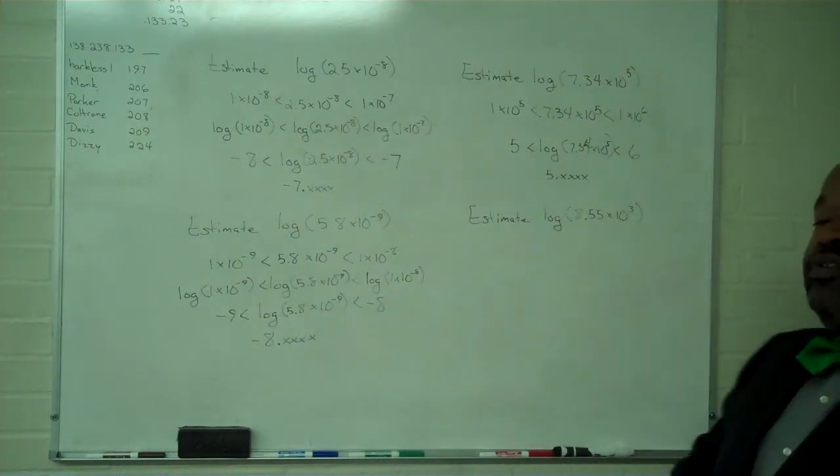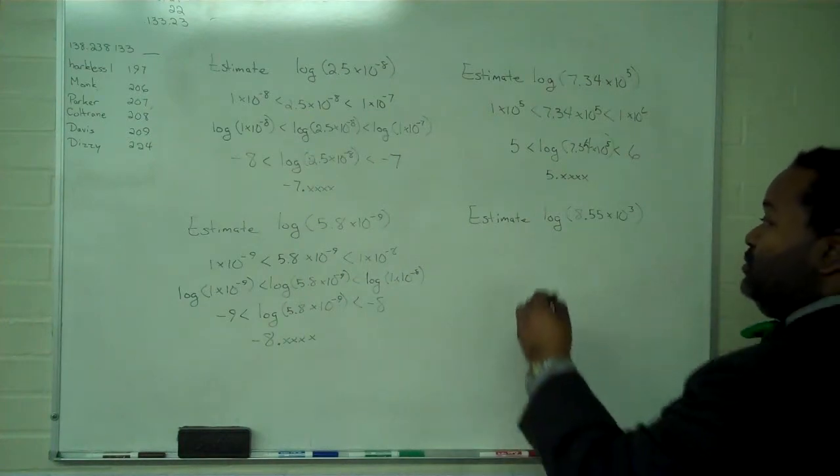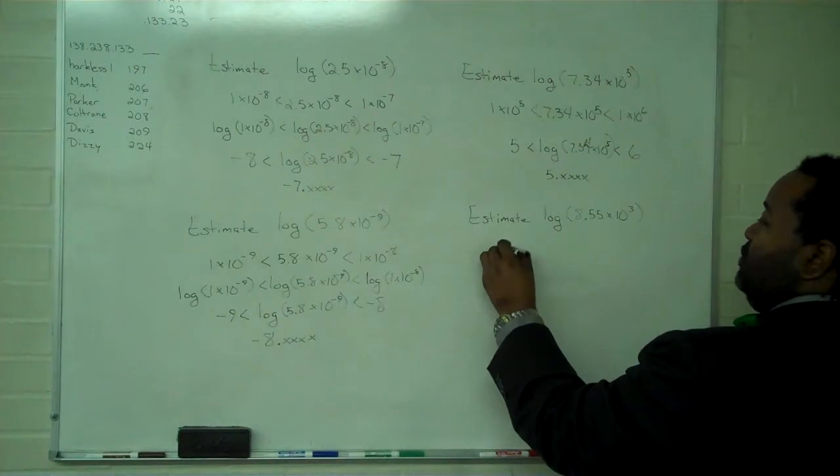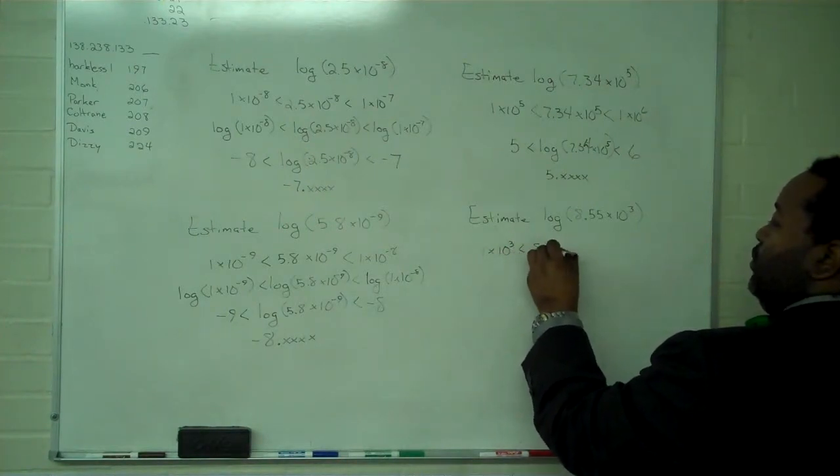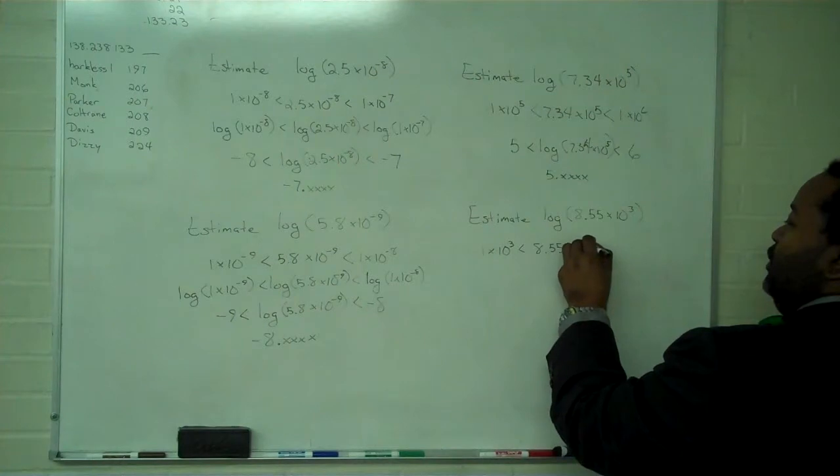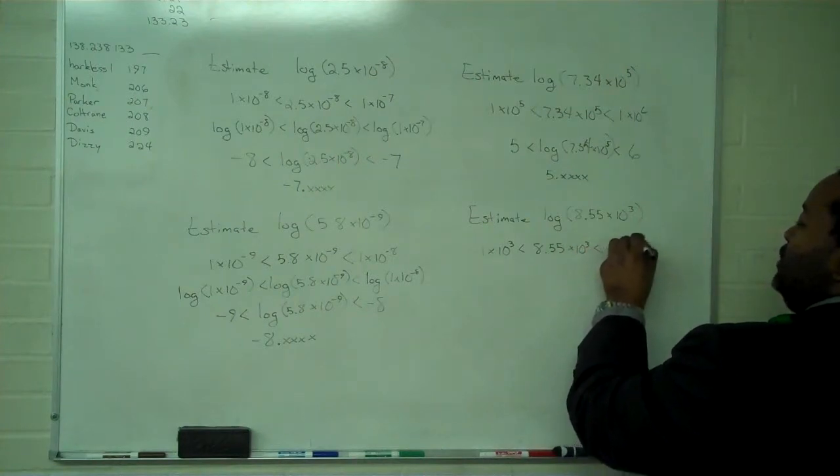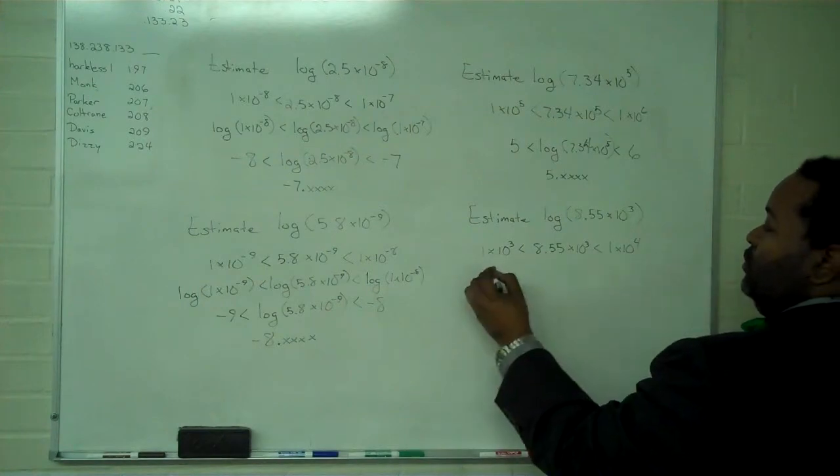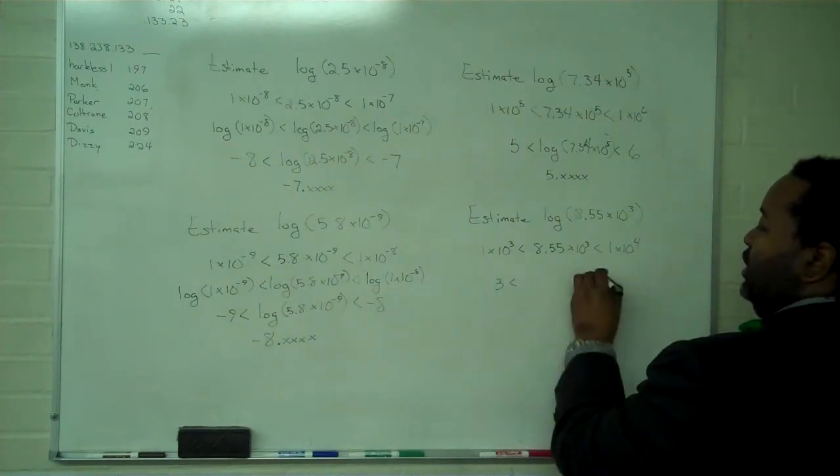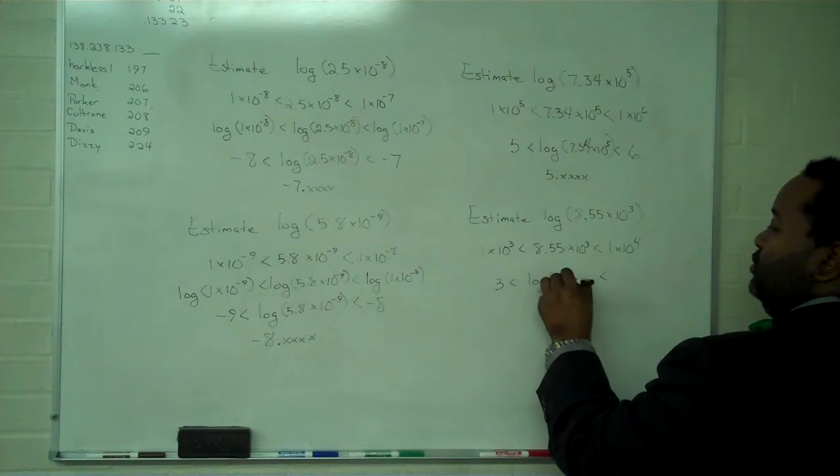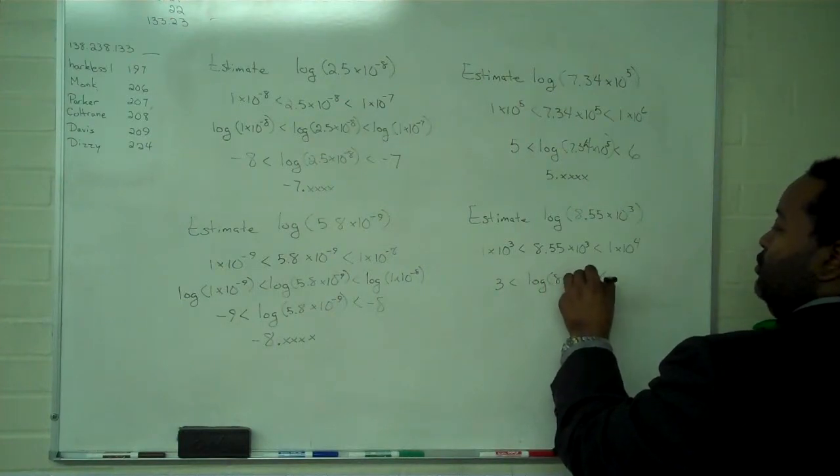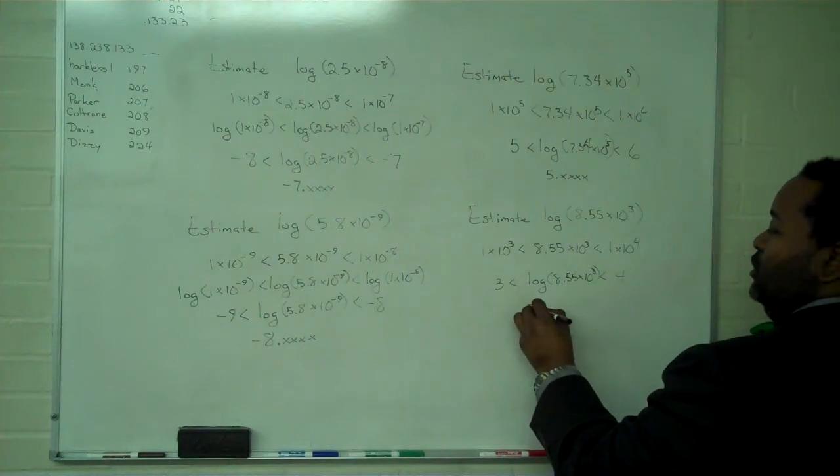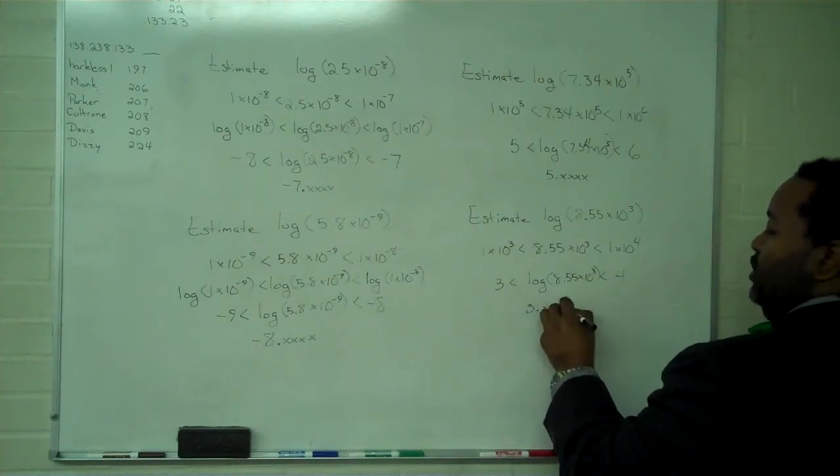So our final example, 8.55 times 10 to the third. We know that this number must be between 1 times 10 to the third and 1 times 10 to the fourth. If we take the logarithm of all three of these, we find that the range for our logarithm is between 3 and 4. So the value we expect is 3 point something.